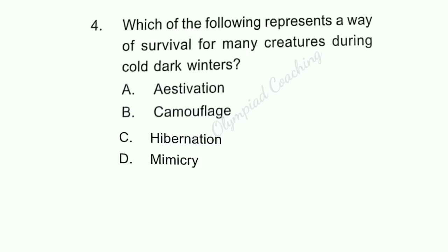Question number 4: Which of the following represents a way of survival for many creatures during cold dark winters? Option A — Aestivation. Option B — Camouflage. Option C — Hibernation. Option D — Mimicry. Option C is correct — Hibernation. Some animals find it difficult to get enough food in winter. To solve this problem, they go into hibernation. During hibernation, the animal's body temperature drops, its heartbeat and breathing also slow down. In this way, they use less energy for survival.